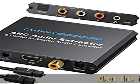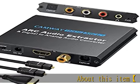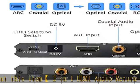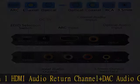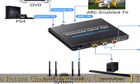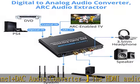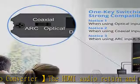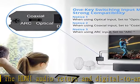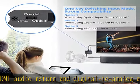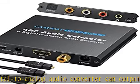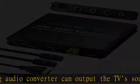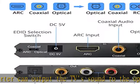About this item: 2-in-1 HDMI audio return channel and DAC audio converter. The HDMI audio return and digital to analog audio converter can output the TV sound to the optical fiber, coaxial, 3.5mm headphone jack, and coaxial output simultaneously, through the HDMI ARC interface. It also supports conversion of digital audio fiber or coaxial signals to analog stereo signals.